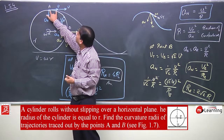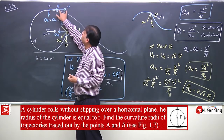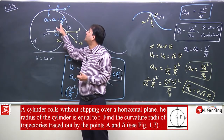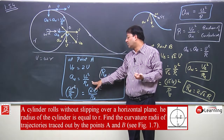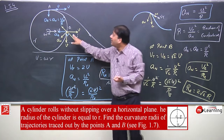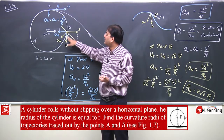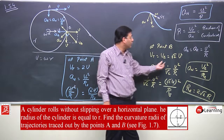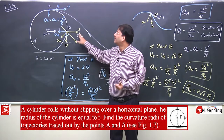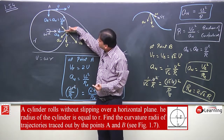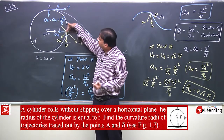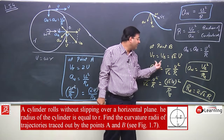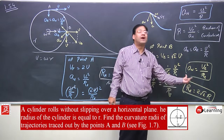To recap: at point A, velocity due to rotation is v and due to translation is v — both in the same direction — so tangential velocity is 2v. Point A's acceleration is radially inward, magnitude v²/r, and this is also the normal acceleration. So radius of curvature at A is 4r. For point B, translation gives velocity v in one direction and rotation gives velocity v perpendicular, so the net velocity is root 2·v at 45 degrees. The acceleration resolved perpendicular to this velocity gives the normal component (1/√2)(v²/r), leading to radius of curvature at B equal to 2√2·r.